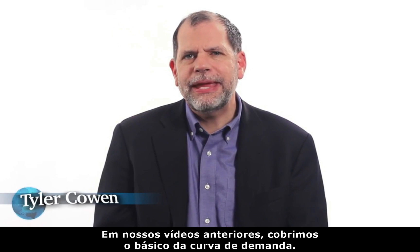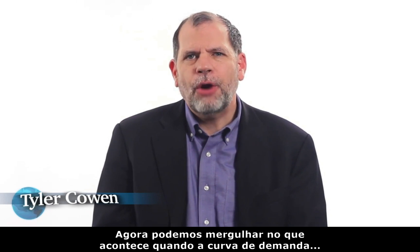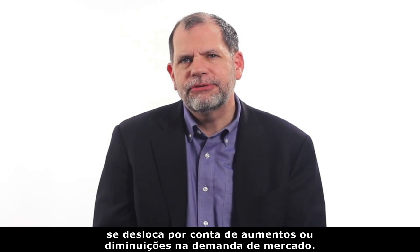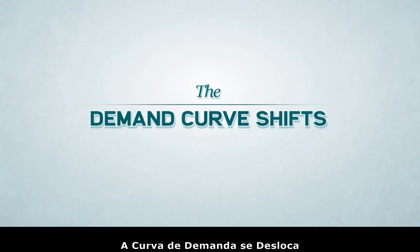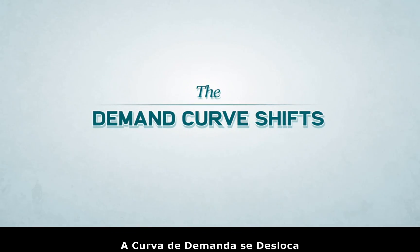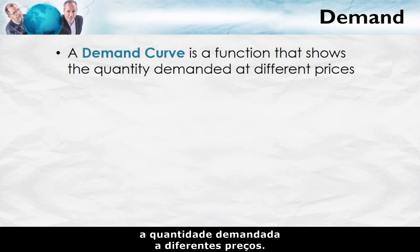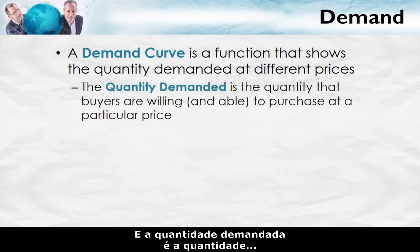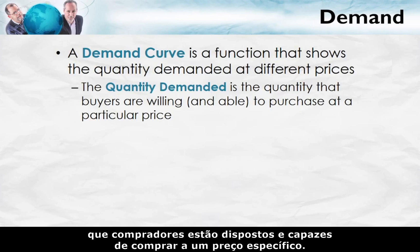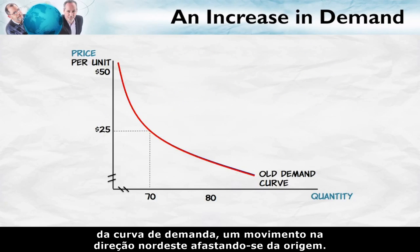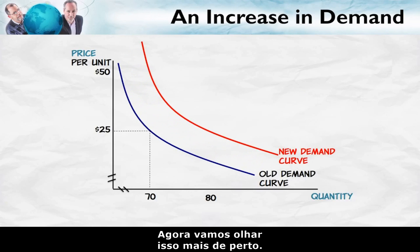In our previous videos, we covered the basics of the demand curve. Now we get to dive into what happens when the demand curve shifts due to increases or decreases in market demand. Remember that a demand curve is a function which shows the quantity demanded at different prices, and the quantity demanded is the quantity that buyers are willing and able to purchase at a particular price. We said last time that an increase in demand means a shifting out of the demand curve, a movement toward the northeast away from the origin.